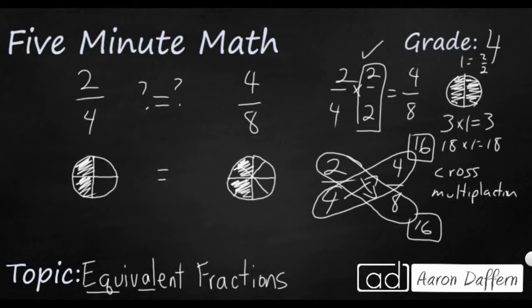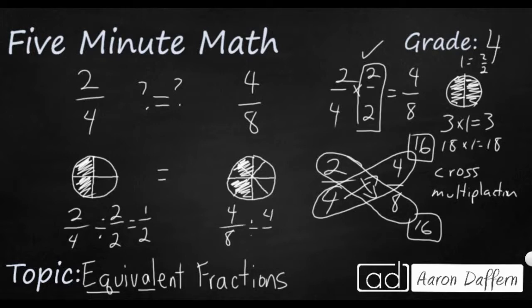One final method is to simplify both fractions. Two-fourths — if you divide by two over two, because two over two is one, you get one-half. Four-eighths — simplify by four over four, which is still equal to one — and you also get one-half. So those are many different ways you can use to determine whether two fractions are equivalent.